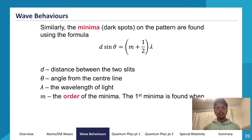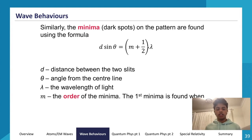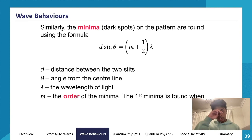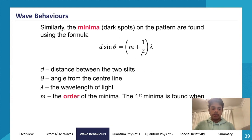To find the location of minima (dark spots), use d sinθ = (m + ½)λ. Dark spots occur when one wave travels an extra half-wavelength relative to the other, causing destructive interference. m = 0 gives the first minima, m = 1 gives the second minima, and so on.